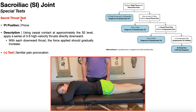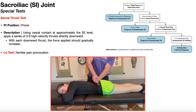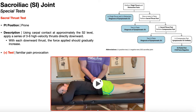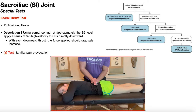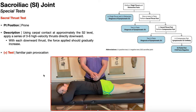The third special test is the sacral thrust test, performed in prone. Begin with carpal contact on the sacrum at approximately the S2 level — you can use the same grip as for spinal mobilizations or spring testing, or simply a flat hand contact. Apply a series of three to six high velocity thrusts directly downward onto the sacrum, with gradually increasing force on each thrust. A positive test is familiar pain provocation.